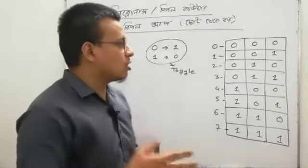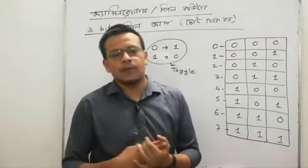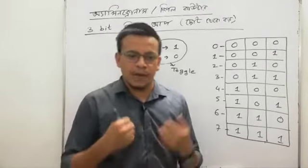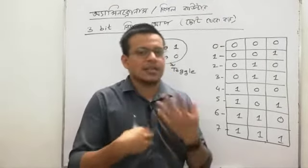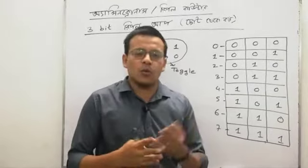So we say toggle. If we say when we say 1, we say toggle. When we say double toggle, 0 is 0, we say toggle. When we say toggle, one is 1.